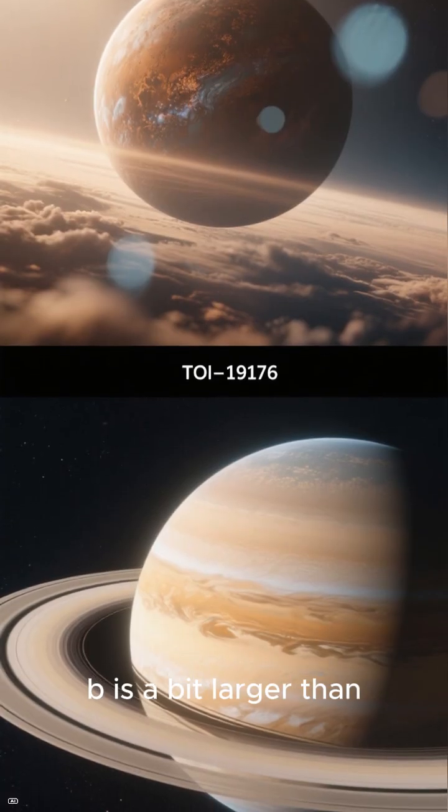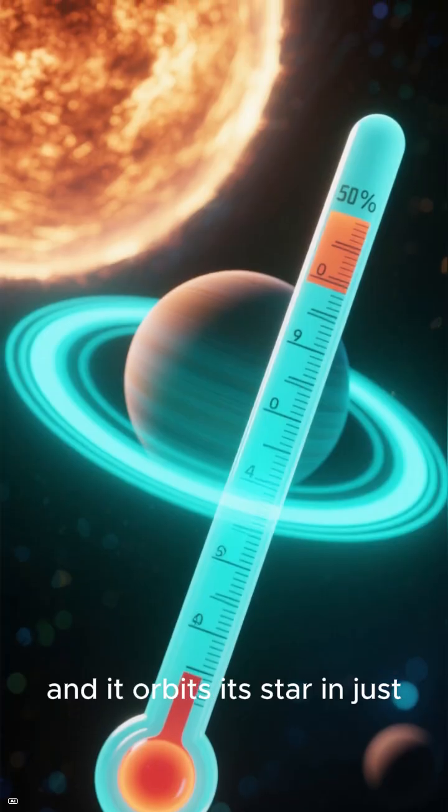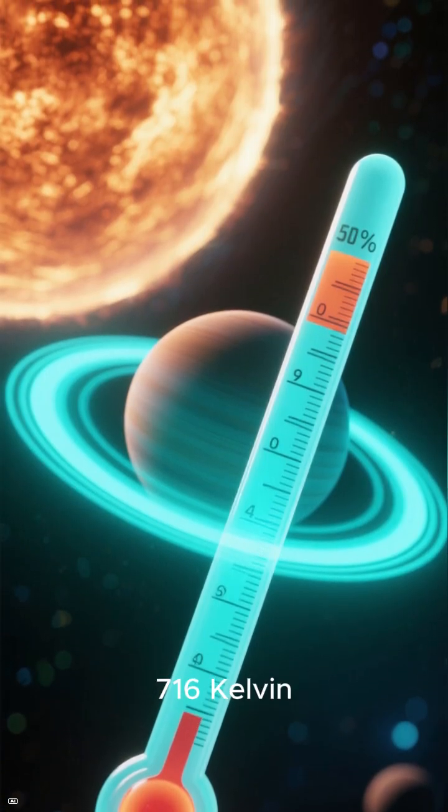TOI-5916b is a bit larger than Jupiter, but less dense, about the density of Saturn. And it orbits its star in just 2.4 days, so close that its temperature hits 716 Kelvin.